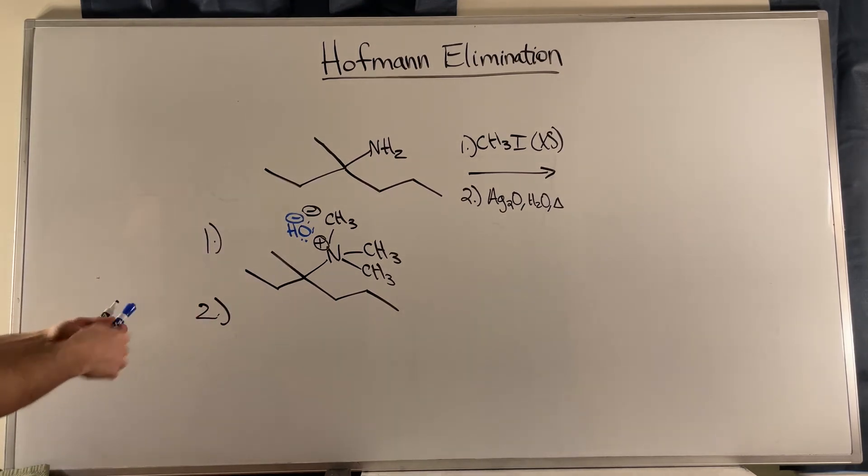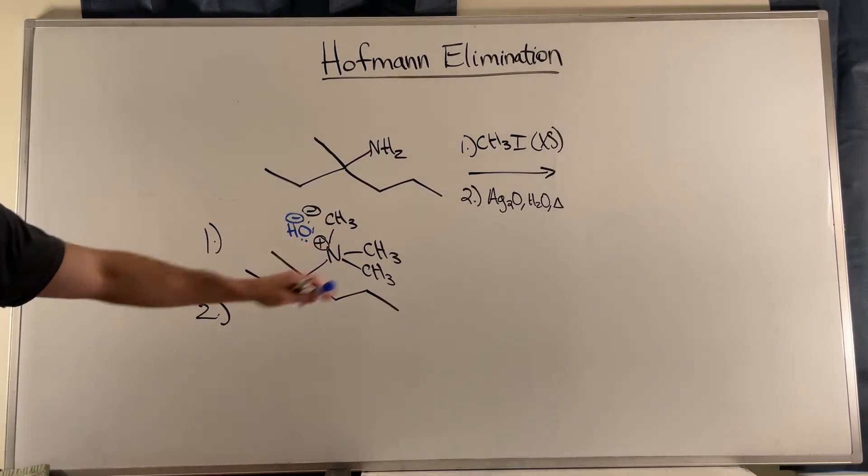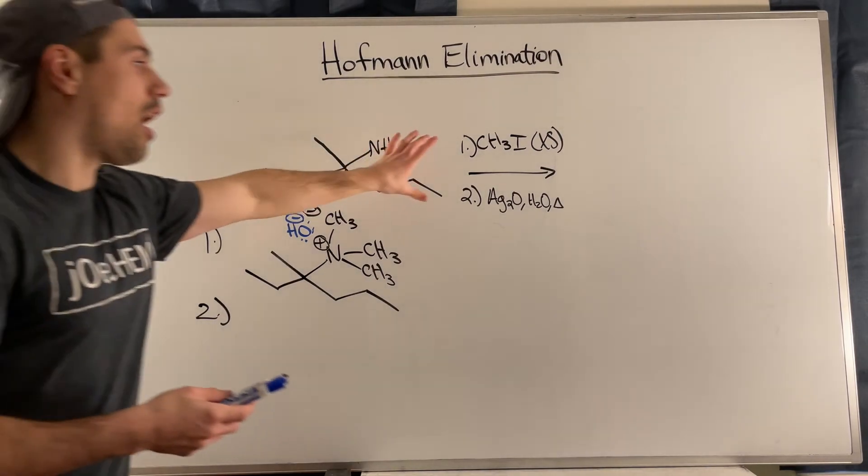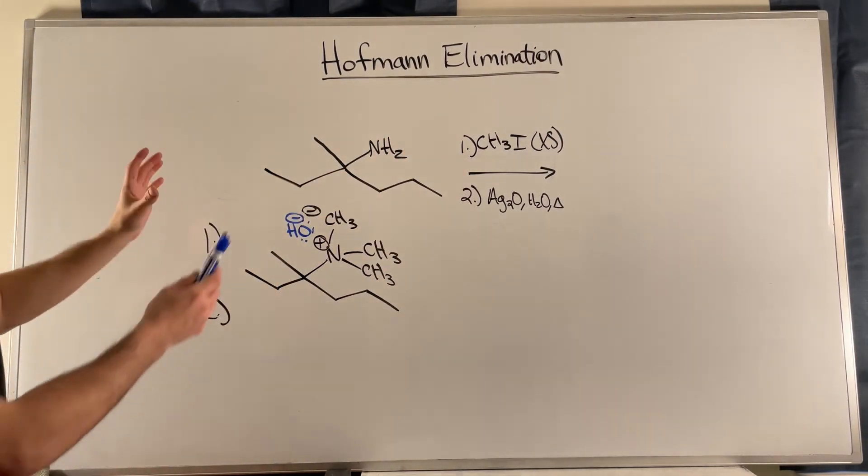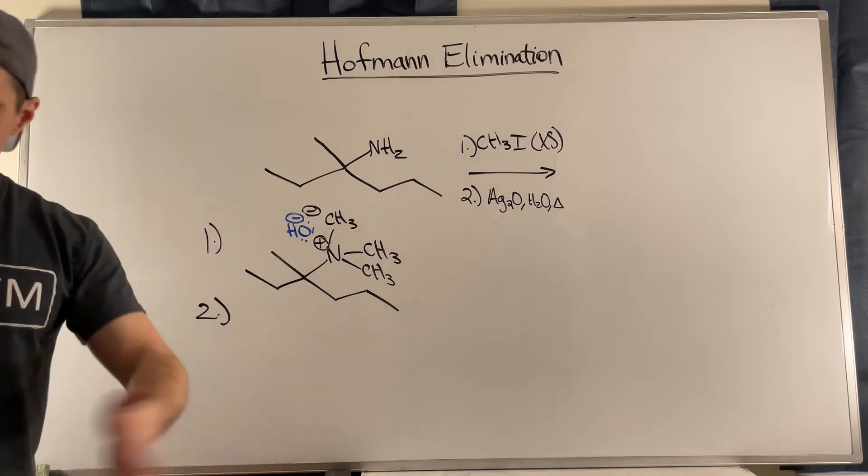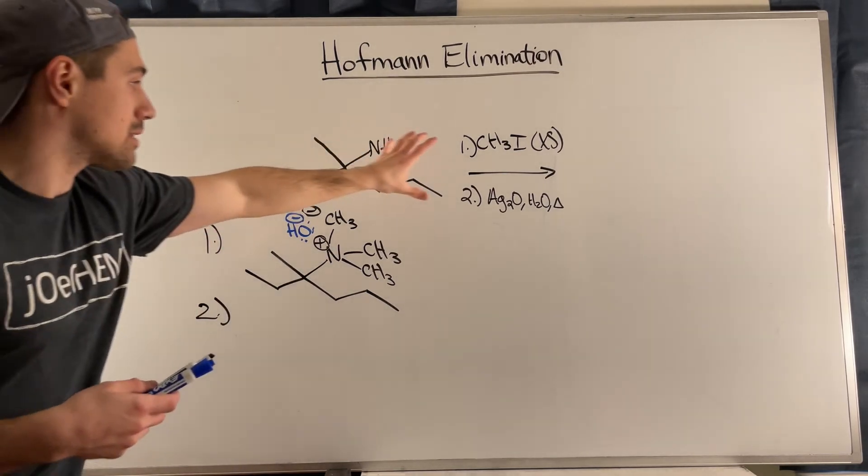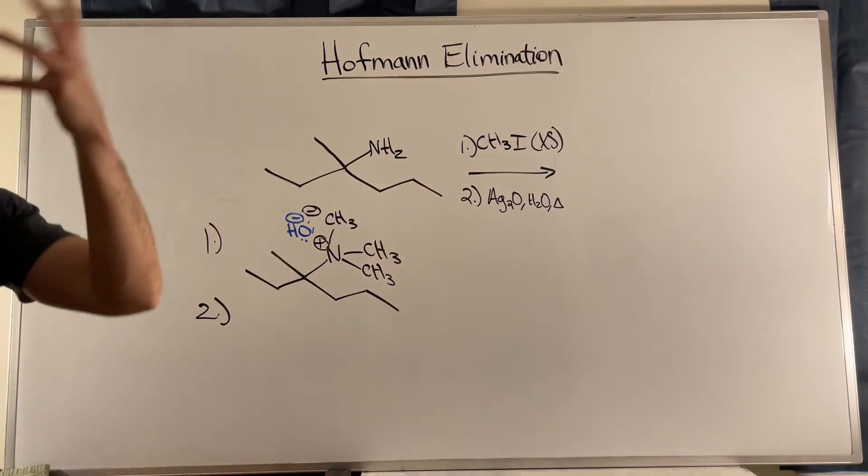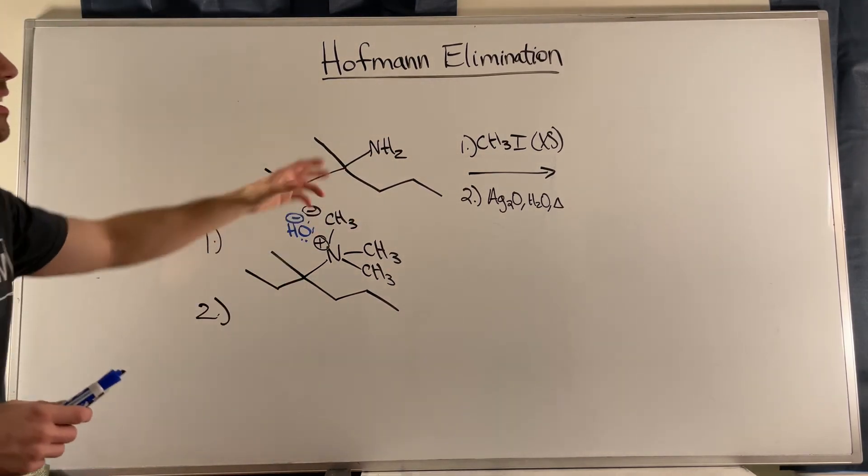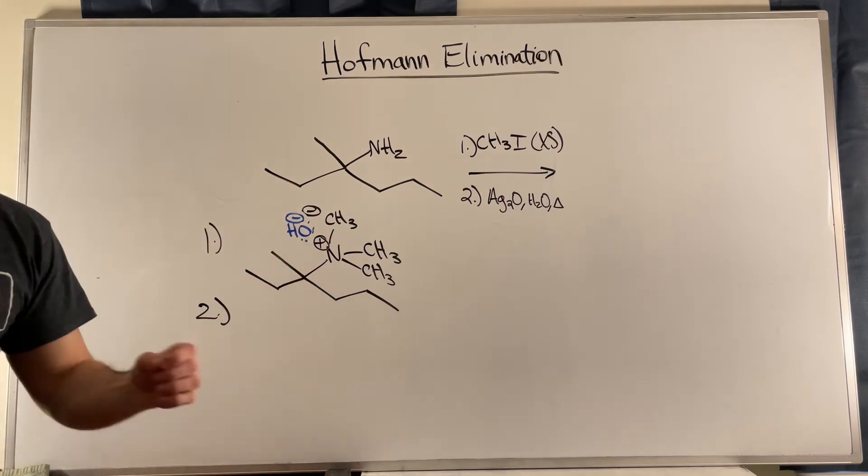And at first we have whatever counter ion helping out and forming this ammonium salt. Now remember in that second step, we know the silver oxide water and heat will make it such that this gets swapped out with the base that ends up helping us produce our alkene product through E2 elimination. Now, that doesn't really matter. You don't have to always do that. If you can see that this is a Hofmann elimination, here's, I just wanted to do that just for the sake of reinforcing what we've already talked about.